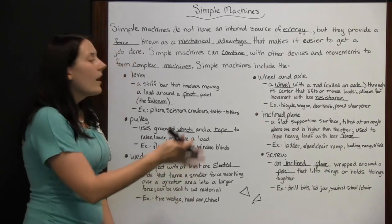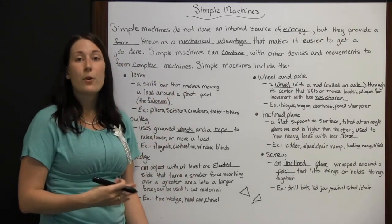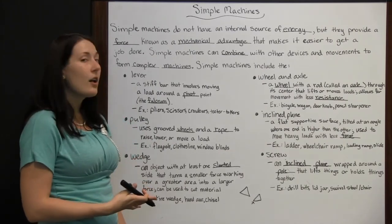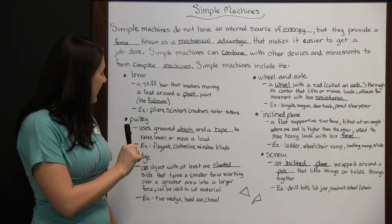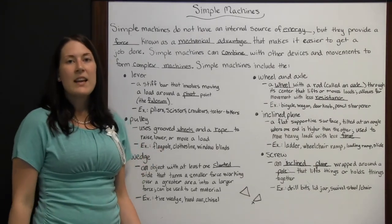So, all of these simple machines are able to combine with one or more of the others to form complex machines that you find all over the place today. Your simple machines are the lever, pulley, wedge, wheel and axle, inclined plane, and screw.